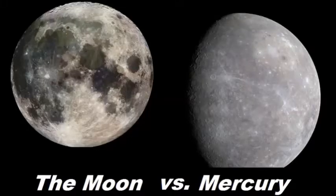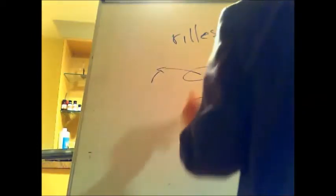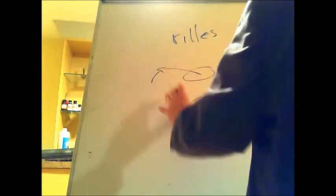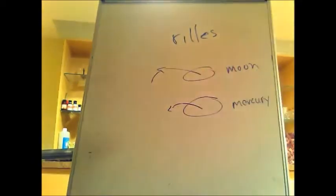Mercury's surface looks similar to the lunar surface, but the ejecta around craters on Mercury appear much closer to the crater than on the Moon. This is easily explained by the fact that gravity on the Moon is about half that on Mercury. Anything ejected from the Moon's surface will travel farther than it would from Mercury. So the mountainous ejecta ring would actually be closer to the crater on Mercury.